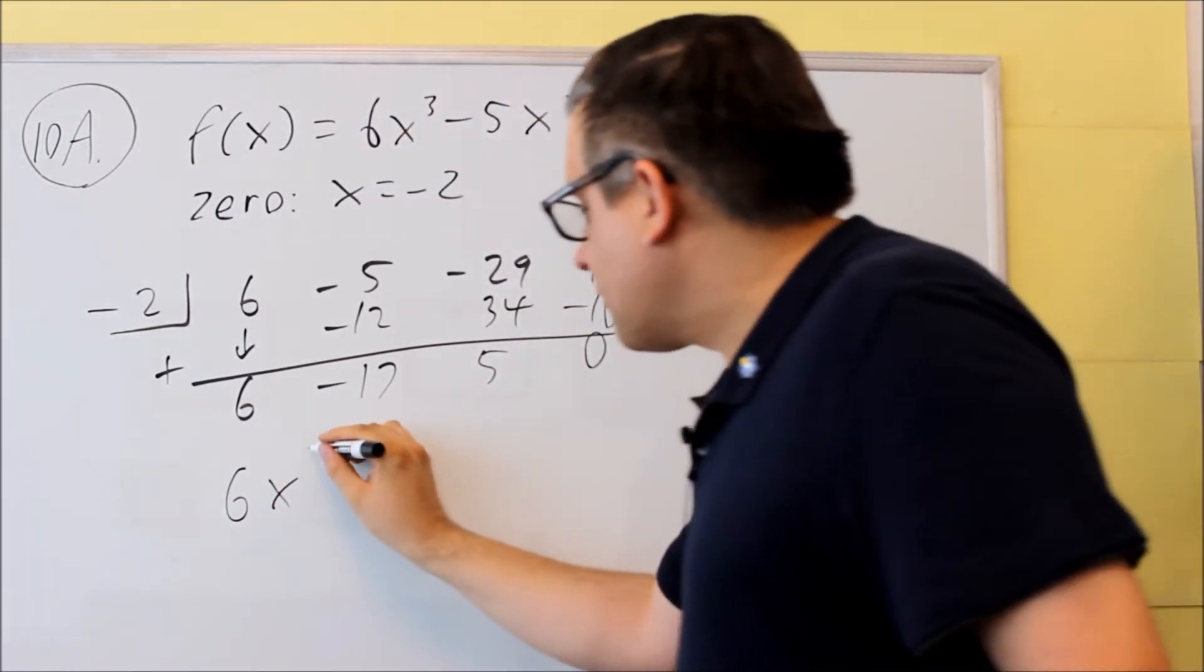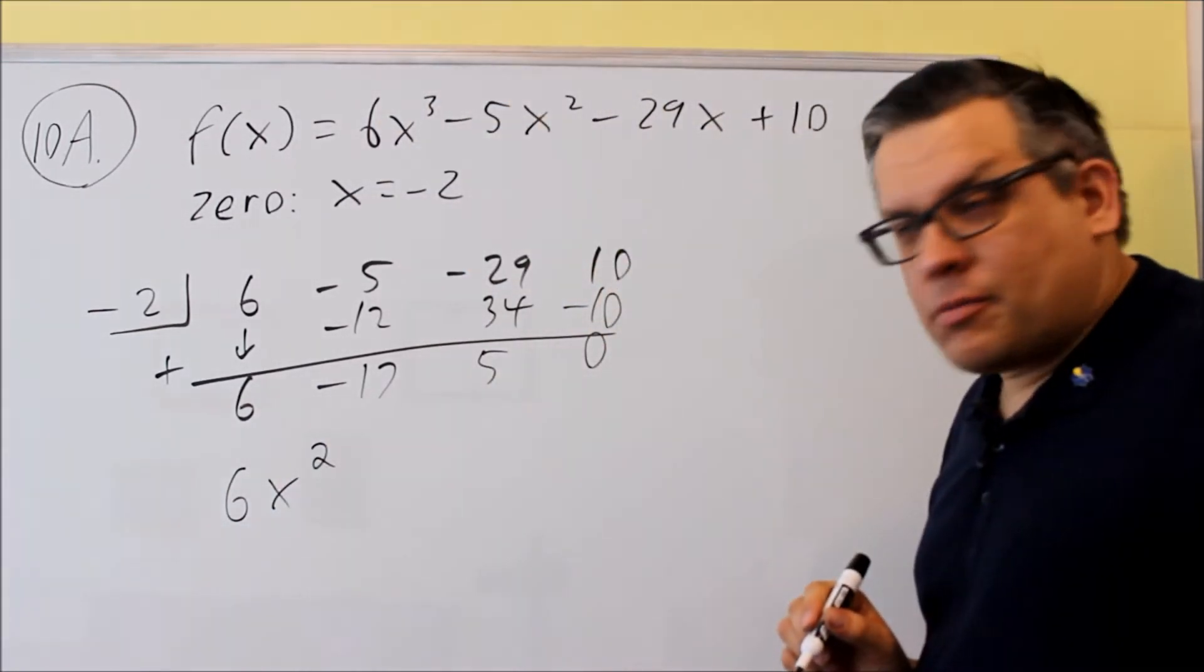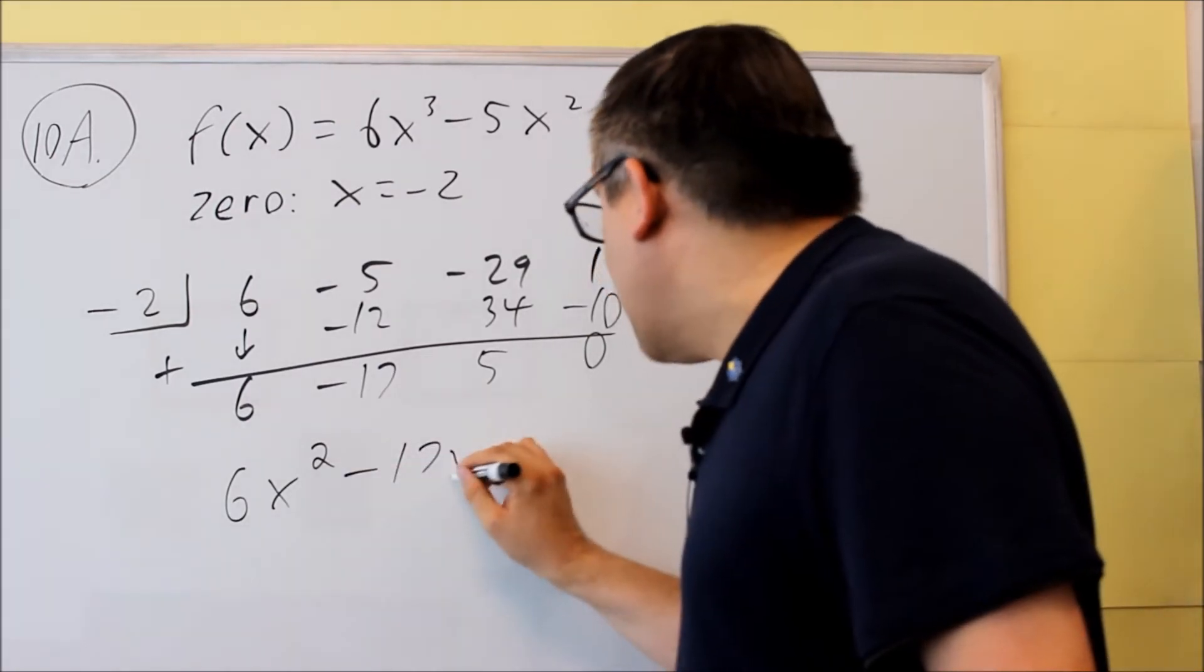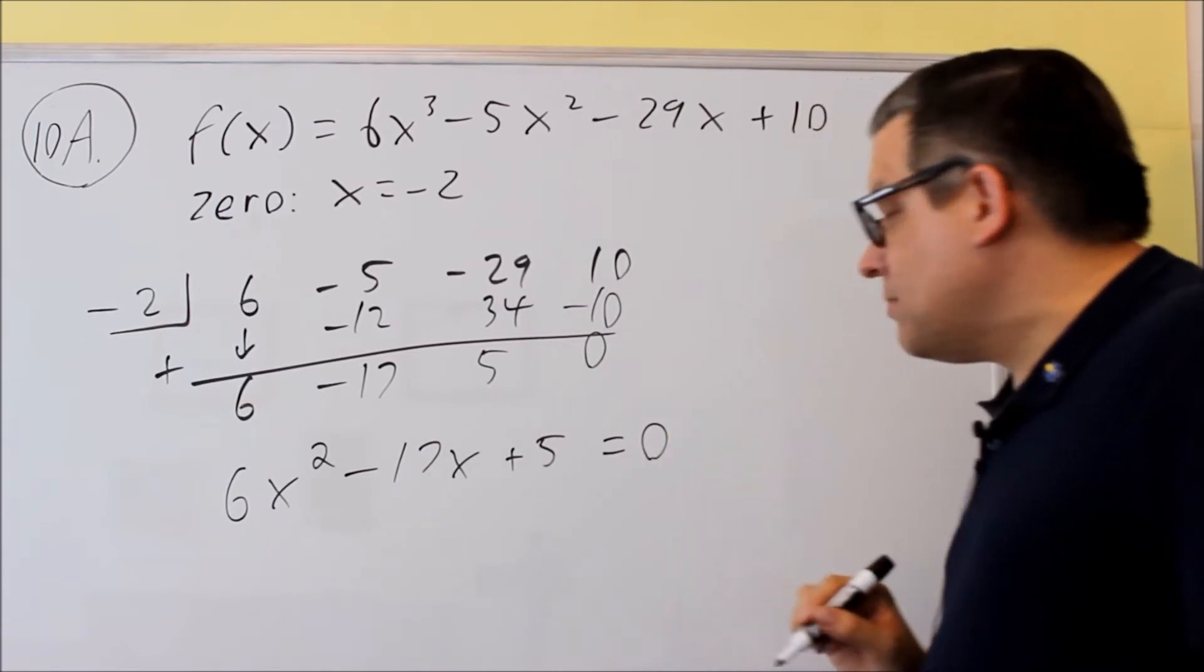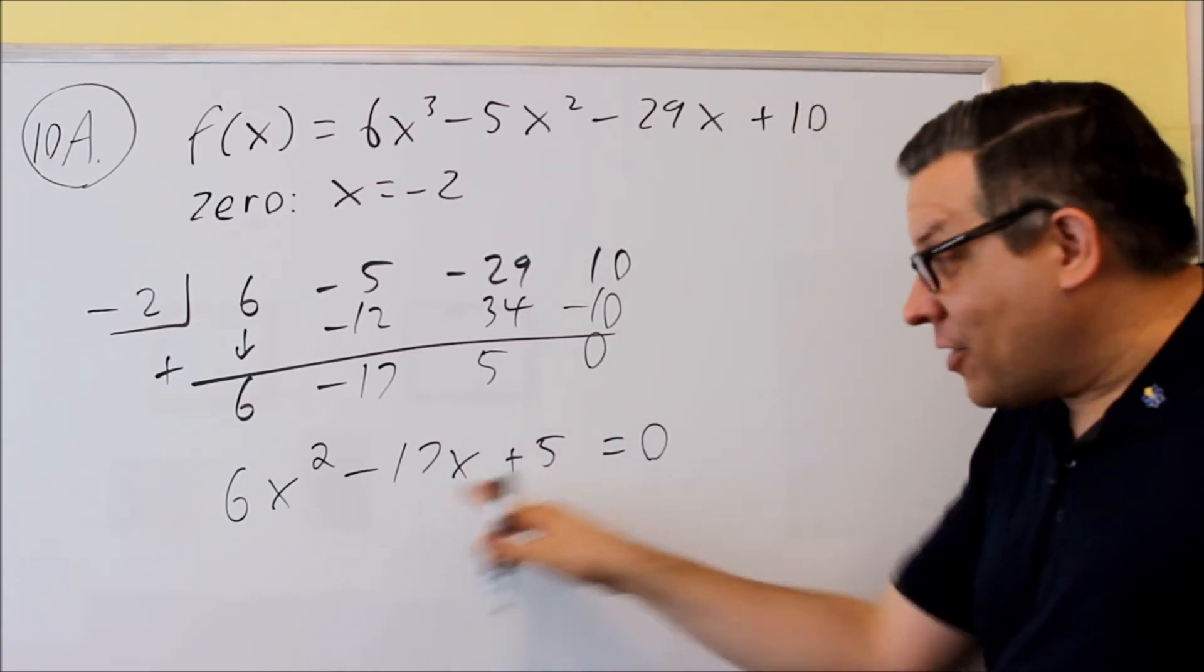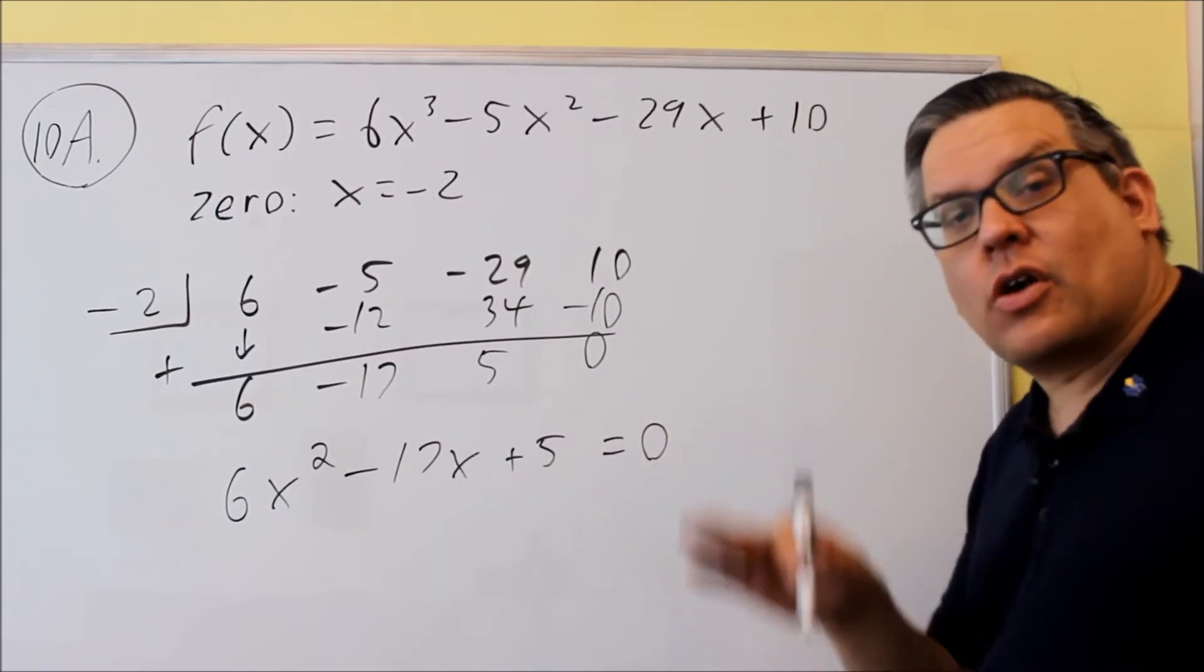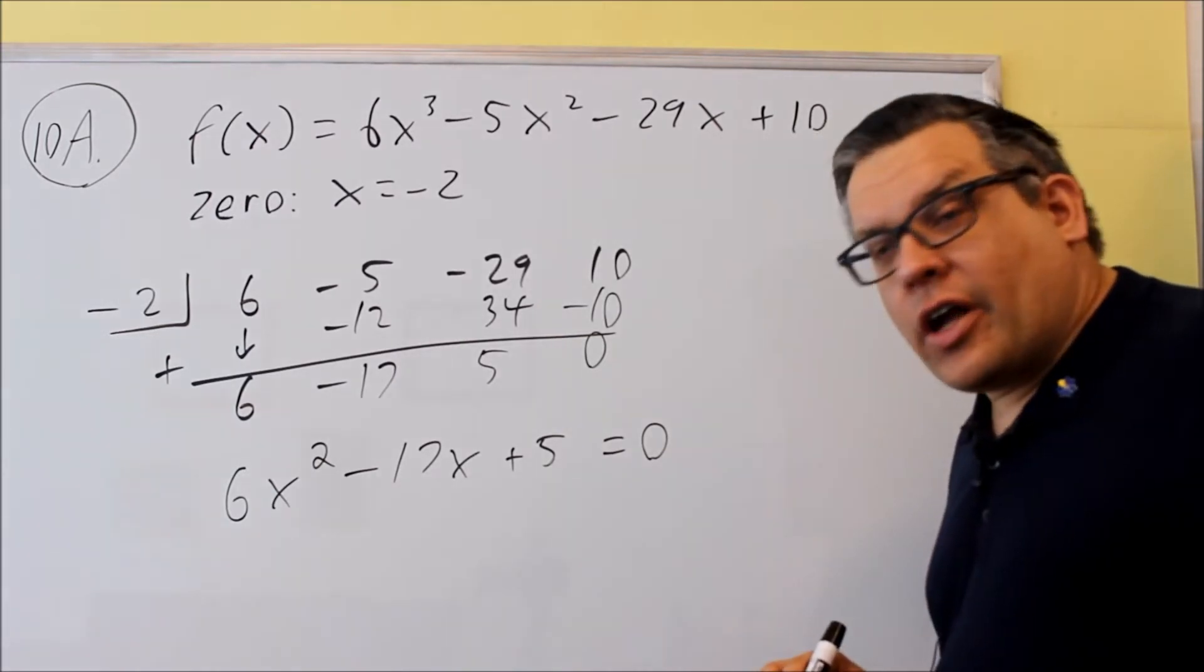So it was a cube, that now becomes a square: 6x squared minus 17x plus 5. We're going to set this equal to 0 and now we're going to factor. You should be able to factor your answer here.